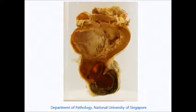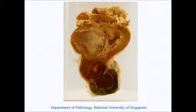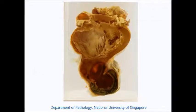The obvious pathology is seen as a localized dilatation or outpouching of the left ventricle in the area of the apex. This is known as an aneurysm.